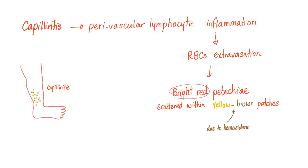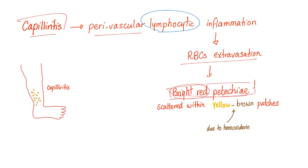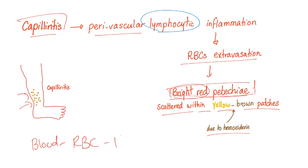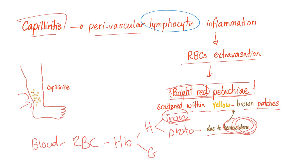In the case of capillaritis, you have perivascular lymphocytic inflammation leading to red blood cell extravasation. Those are bright red petechiae scattered within yellow-to-brown patches. Why yellow to brown? This is hemosiderin, because your blood contains red blood cells which contain hemoglobin; hemoglobin has heme and globin; heme has iron, and it's the hemosiderin that causes this yellow-brown discoloration.